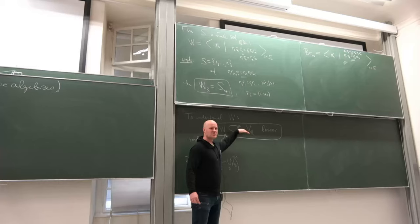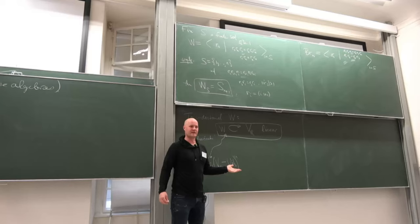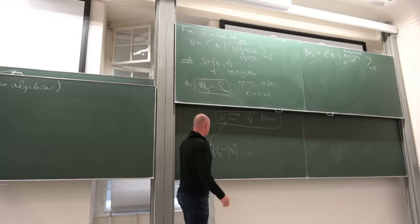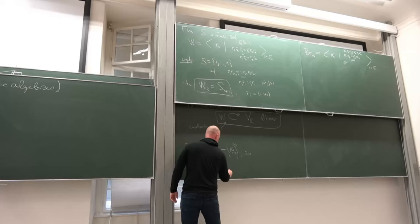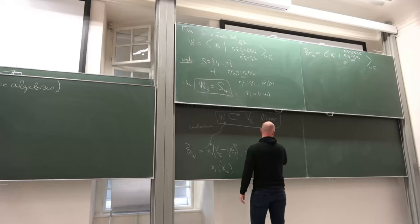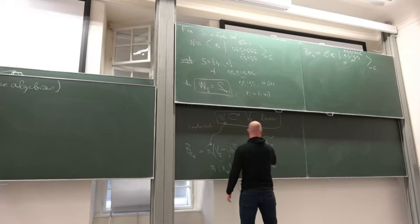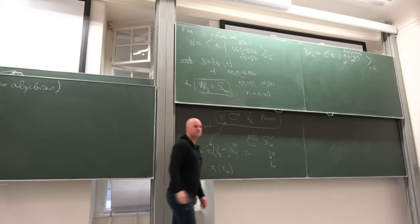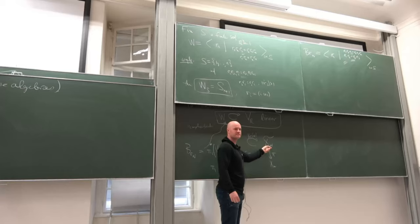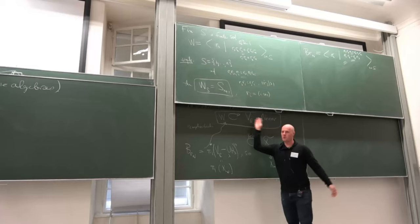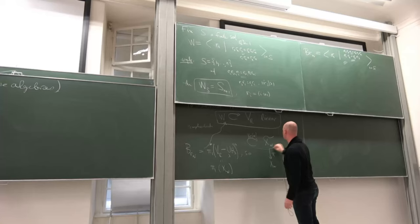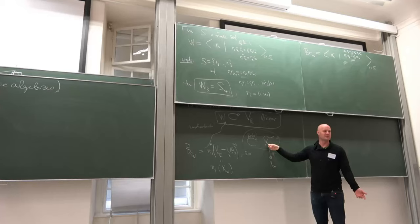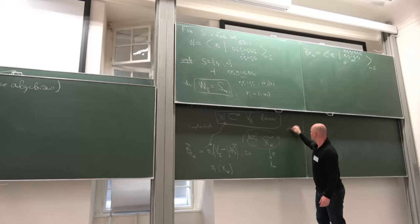You start with an action of W on a real vector space. To get the braid group, you complexify the vector space, remove a bunch of hyperplanes, and look at pi_1 of that space. If you want to study the braid group — let's call this space X_W — you should look at the universal cover of this space, which has an action of the braid group on it. The problem is that we started with a linear world where tools of linear algebra were available, and now we've exited the linear world. This is not a vector space anymore, and this is not a linear action of the braid group on any vector space. You've left the world of representation theory in order to do it.